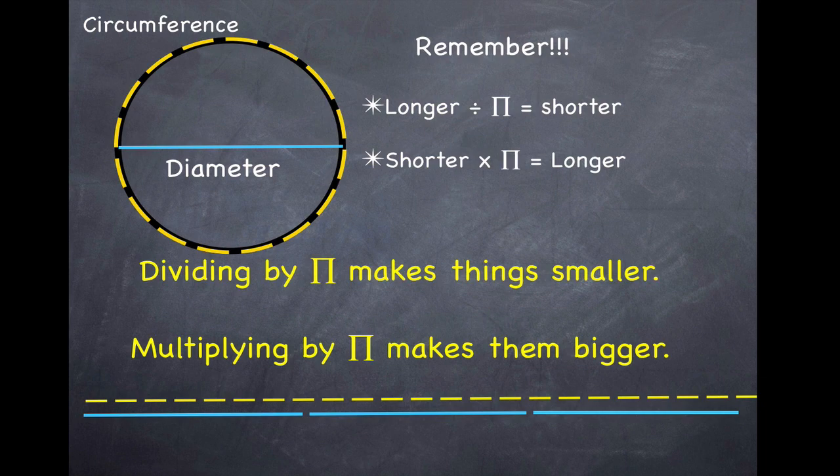So remember, you're going to be asked to do two things. Take the circumference and use it to find the diameter, and taking the diameter and using it to find the circumference. You're going to take the longer number and divide it by pi. That will give you the shorter number. Circumference divided by pi will give you the diameter, the shorter line. And inversely, if you take the shorter number, that's the diameter, and multiply it by pi, it will become a longer number. It will turn your diameter into a circumference. This is a very beginning relationship, but it's how you find the circumference of the circle or find the diameter. Good luck.